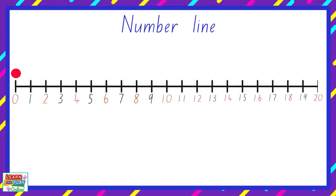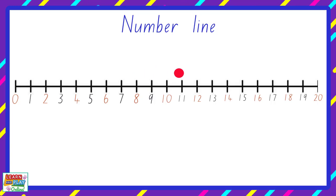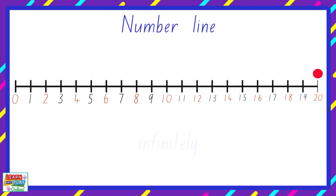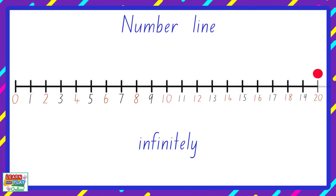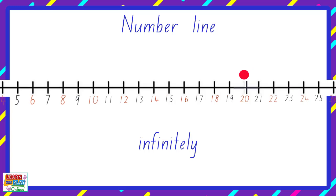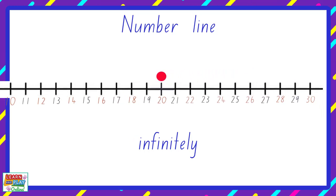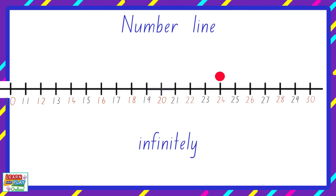0, 1, 2, 3, 4, 5, 6, 7, 8, 9, 10, 11, 12, 13, 14, 15, 16, 17, 18, 19, 20. Number lines continue infinitely. This means they never end. 21, 22, 23, 24, 25, 26, 27, 28, 29, 30.